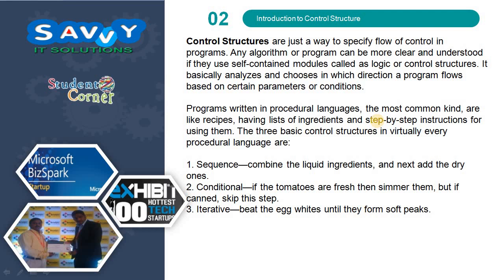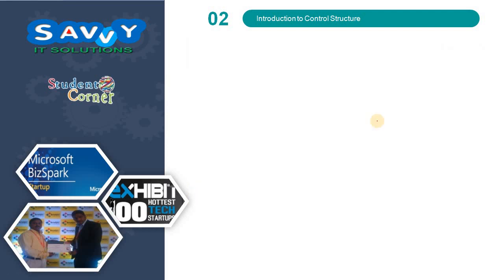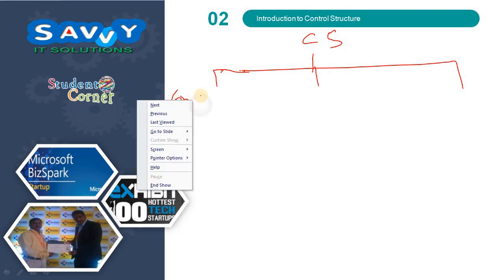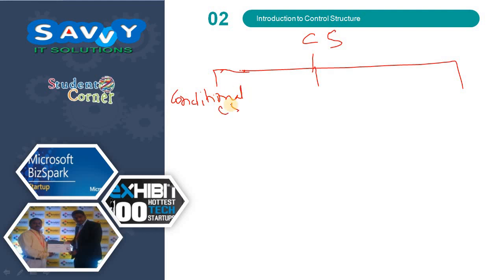Now types of control structures are discussed. Control structures are divided into three types.